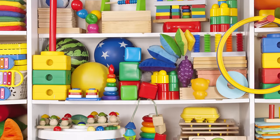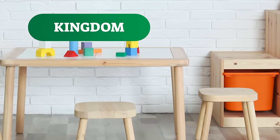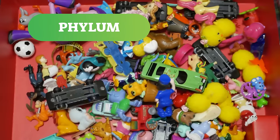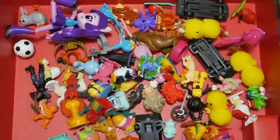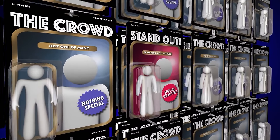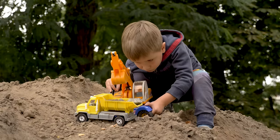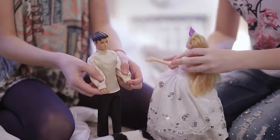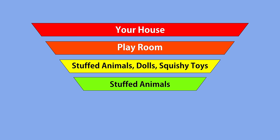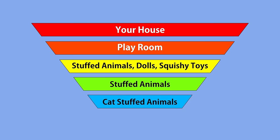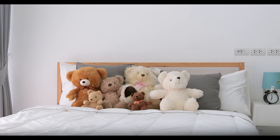To help understand these charts, let's use the toy organizing example. The second level represents your toy room — one room inside your home with all your toys. As the levels move further down the triangle, they get more specific. The toy room level includes cars, trucks, balls, books, dolls, stuffed animals, and other toys. The next level might say stuffed animals, dolls, and squishy toys. The level after that is very specific — just stuffed animals. And the final, most specific level might say stuffed animals that are cats.